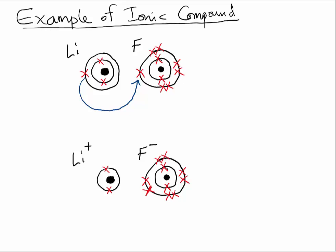Lithium, having lost one electron, will now be like helium, but because it lost an electron it will carry a charge of plus one. Fluorine, having gained an electron, will now have a charge of minus one and will have an electronic arrangement similar to neon. The compound formed between these two is LiF, and it is very stable because the electrostatic attraction between the positive lithium ion and the negative fluorine ion makes both ions very stable.